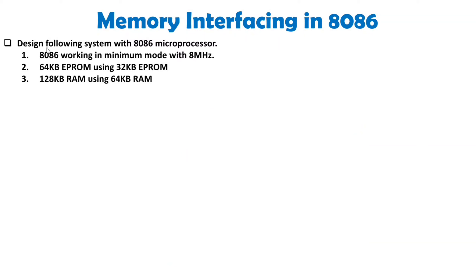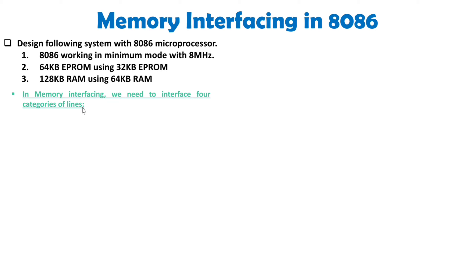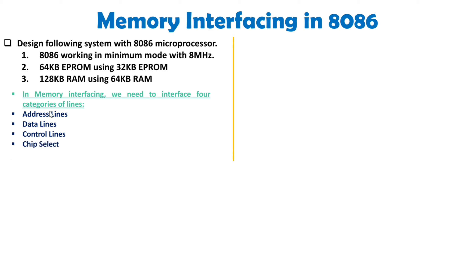The question is to design the following system with the 8086 microprocessor. Here, 8086 is working in minimum mode at a frequency of 8 MHz. We need to interface 64 KB of EPROM using a 32 KB EPROM chip, and 128 KB of RAM using a 64 KB RAM chip. To interface this memory, you should know four categories of lines: address lines, data lines, control lines, and chip select. Once you know these four things, you can easily interface this memory.